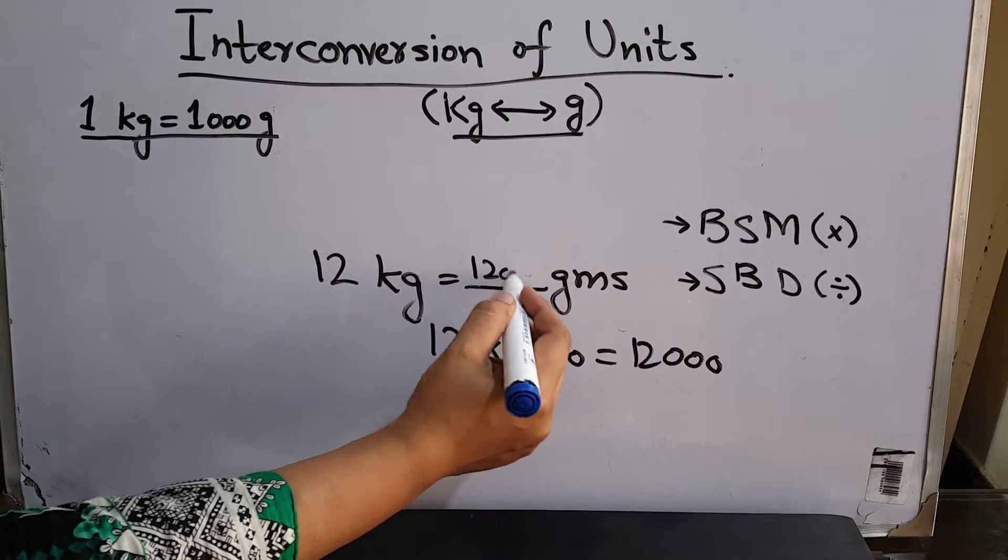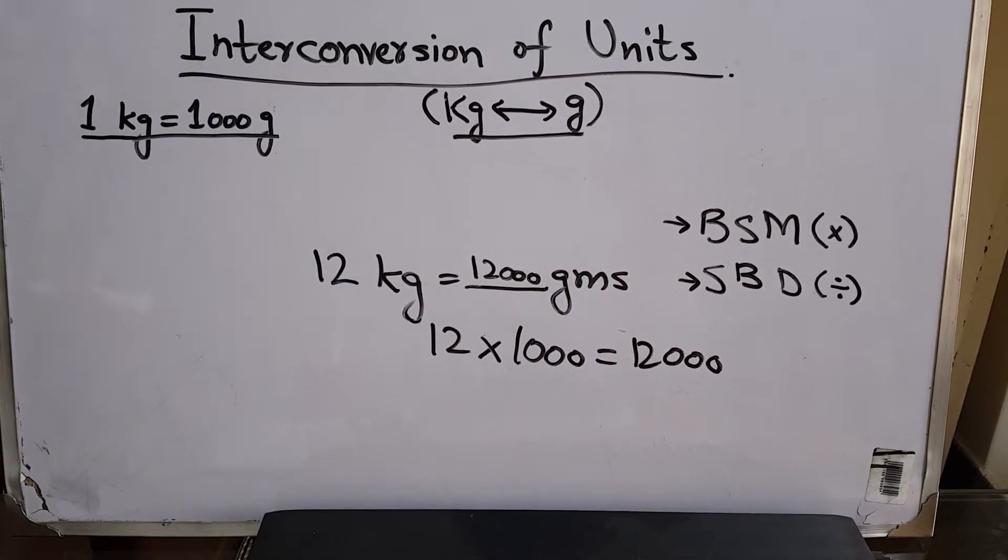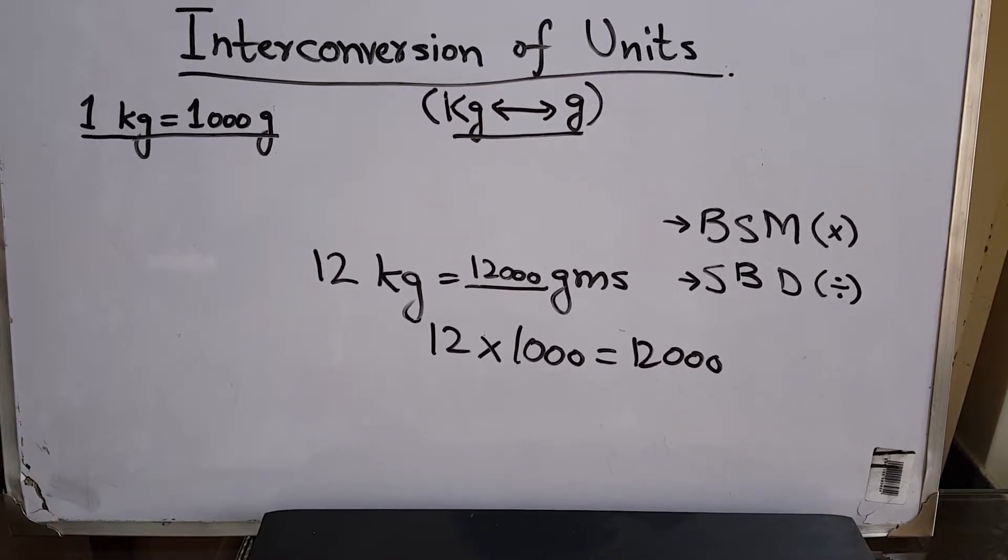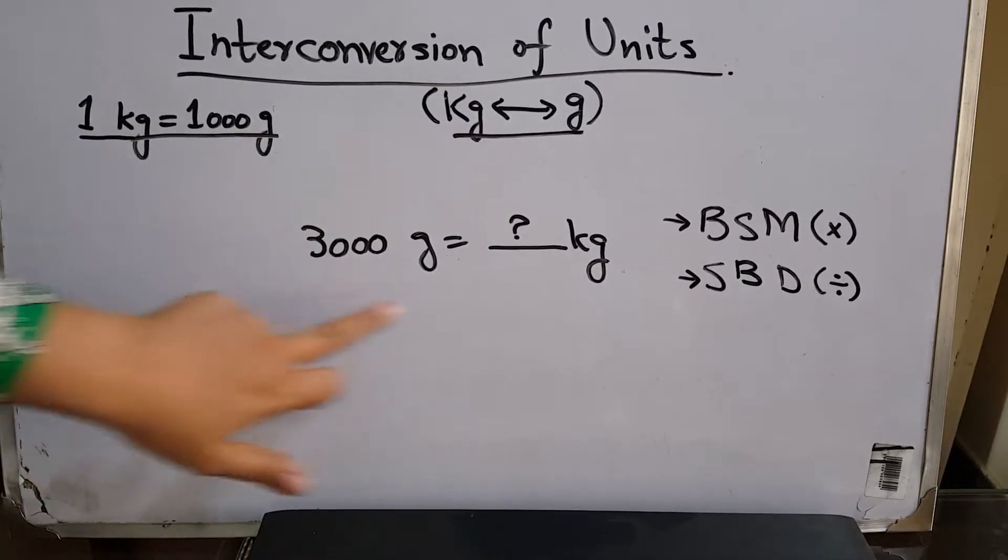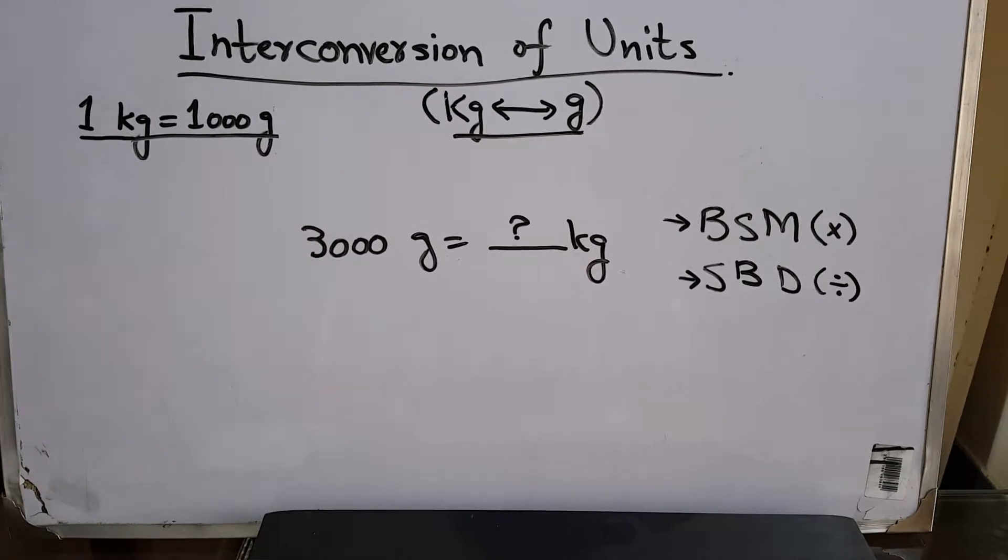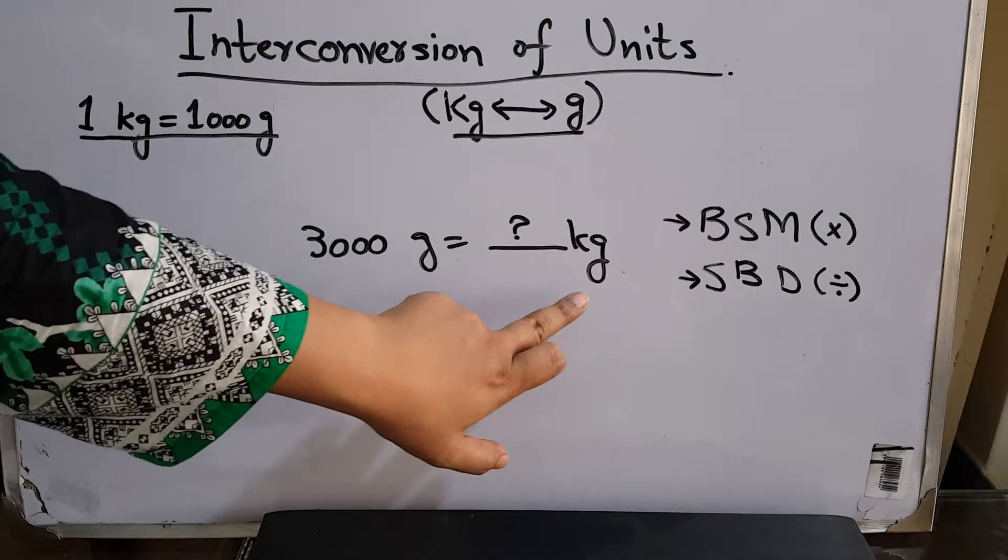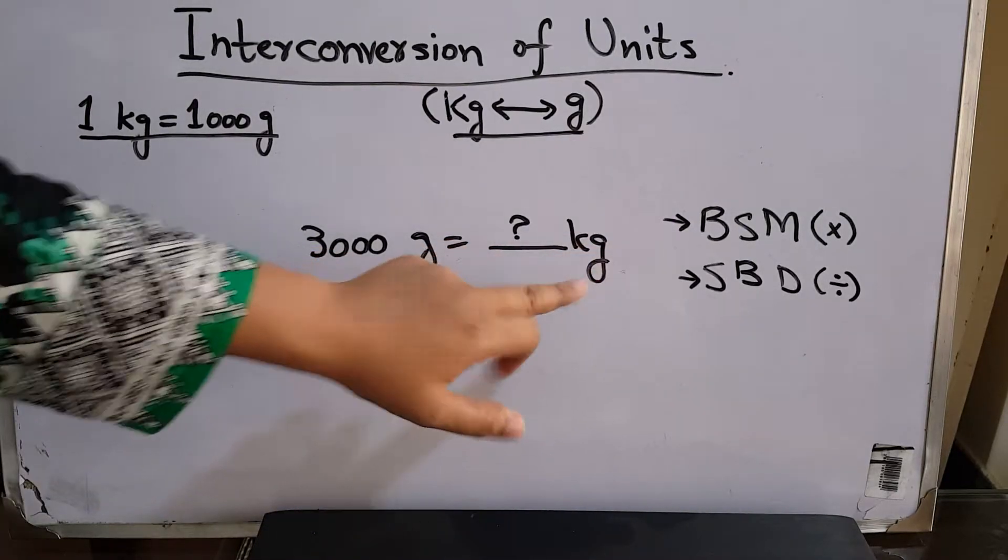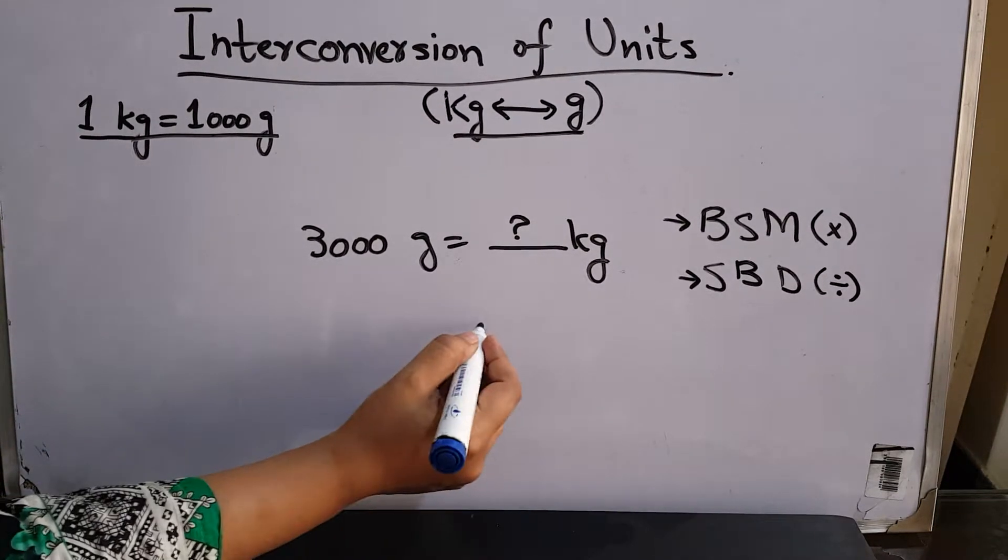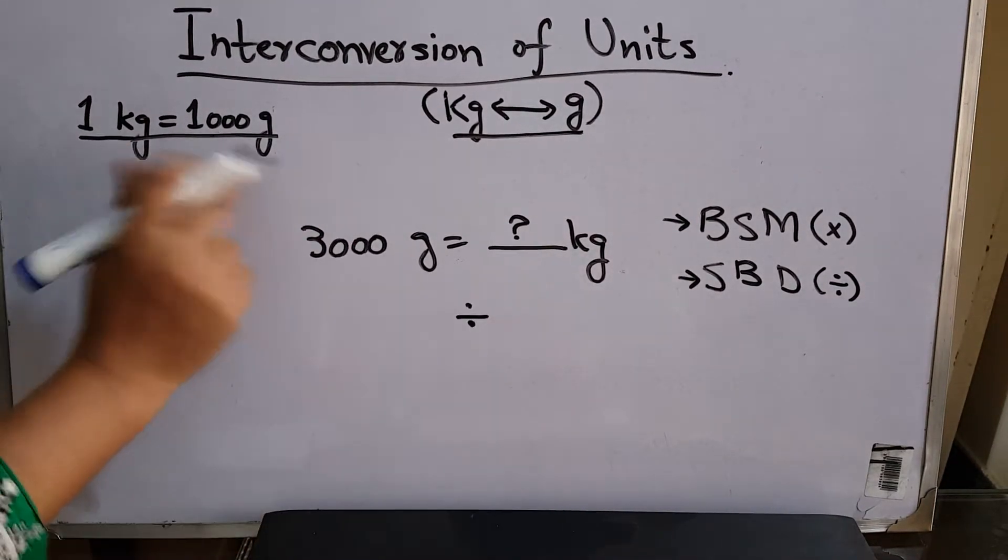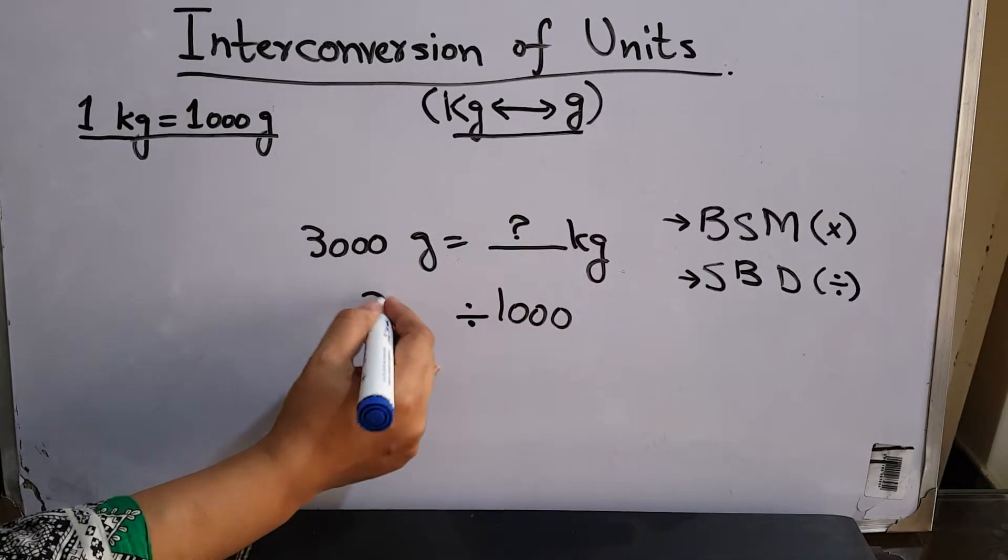Now we'll see the other way, going from grams to kilograms. The question is: how many kg will be equal to 3,000 grams? Gram is a smaller unit and kg is a bigger unit, so going from smaller to bigger, you divide. You're going to divide the given number, 3,000, by the relationship, which is 1,000.